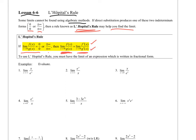We're not going to be using the quotient rule here. This is just: take the derivative of the top, take the derivative of the bottom, and keep them separate. Let's try this and see what we end up with for number 1.